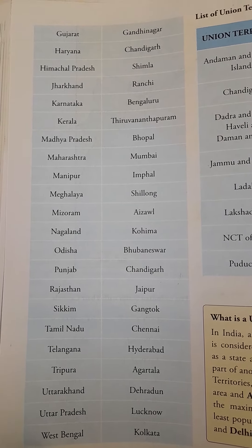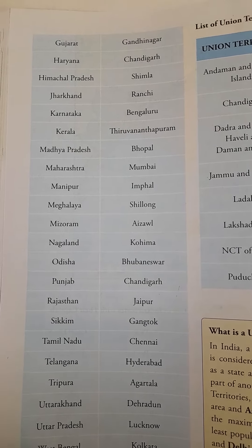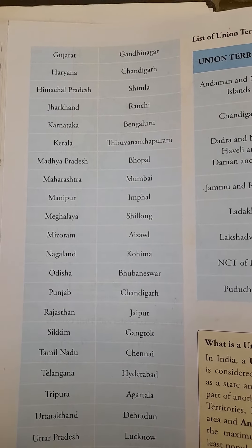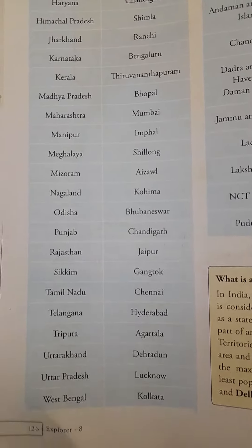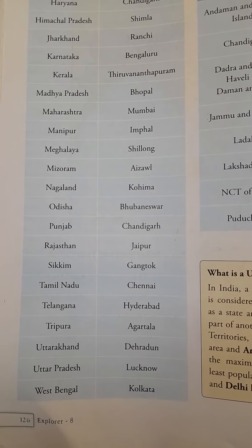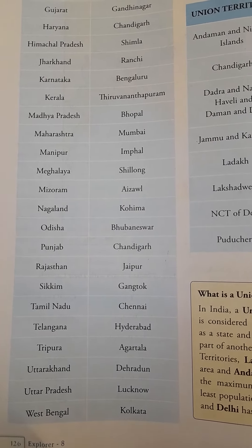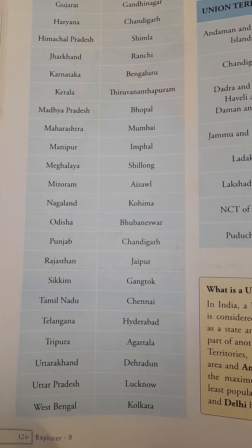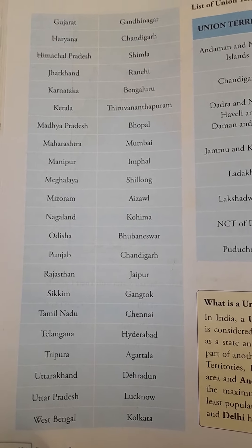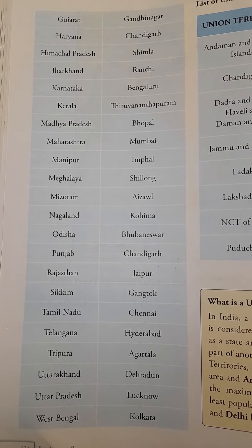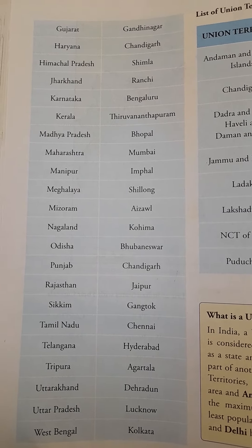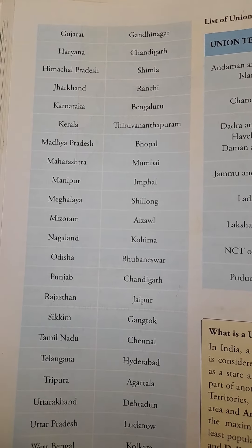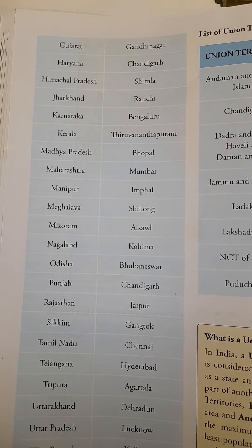Jharkhand — capital is Ranchi. Karnataka — capital is Bengaluru. Kerala — capital is Thiruvananthapuram. Madhya Pradesh — capital is Bhopal. Maharashtra — capital is Mumbai. Manipur — capital is Imphal. Meghalaya — capital is Shillong. Mizoram — capital is Aizawl. Nagaland — capital is Kohima. Odisha — capital is Bhubaneswar. Punjab — capital is Chandigarh. Notably, Haryana and Punjab share a common capital.